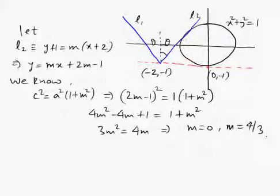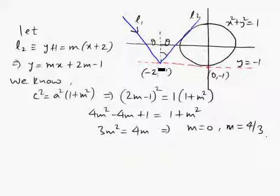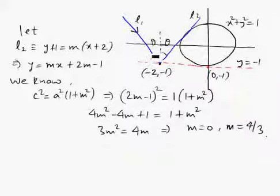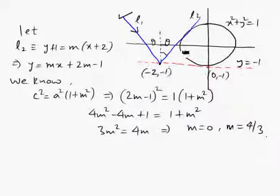In this question, there is a circle whose center is at the origin and radius is 1. There is an incident ray that strikes a tangent drawn at (0, 1) to the circle. The equation of this tangent is y equals minus 1 — a horizontal line. The incident ray strikes this tangent line at the point (-2, -1), and after getting reflected from this line, it touches the circle. We are supposed to find the equation of the incident ray L1, such that the reflected ray touches the circle.